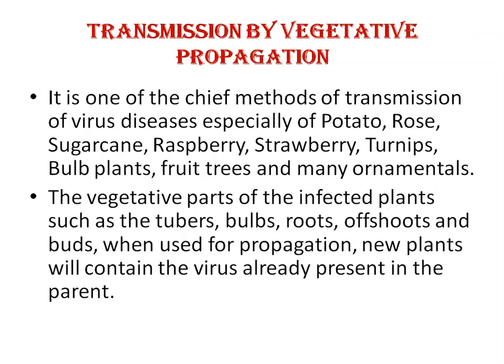Second: transmission by vegetative propagation. Vegetative propagation is a process in which plants reproduce from stem, roots, leaves, or any part of the plant. It is one of the chief methods of transmission of virus diseases, especially of potato, rose, sugarcane, raspberry, strawberry, and many ornamental plants. Vegetative parts of infected plants such as tubers, roots, and offshoots, when used for propagation, result in new plants that contain the virus already present in the parents. This type of transmission is very common in plants propagated vegetatively.